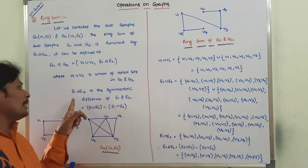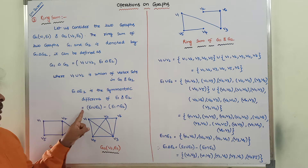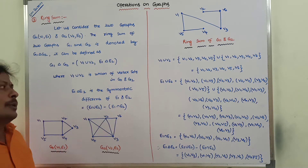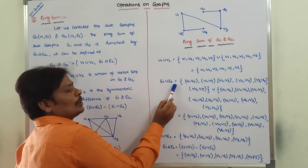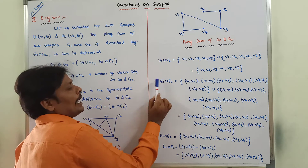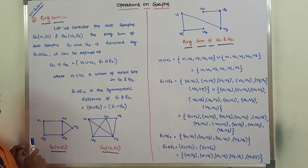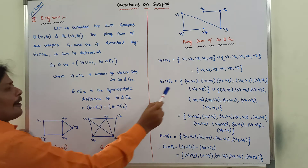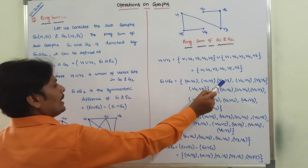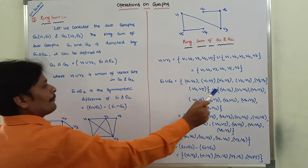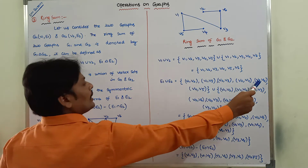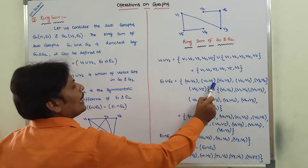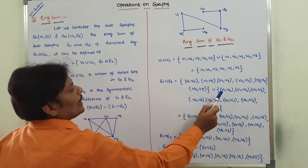Next, E1 delta E2 equals E1 union E2 minus E1 intersection E2. E1 union E2 starts with the edge set in graph G1: {V1,V2}, {V1,V5}, {V2,V3}, {V2,V4}, {V3,V4}, and {V4,V5}. These are the edges from G1 that begin the union.